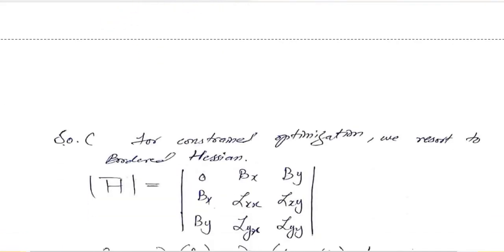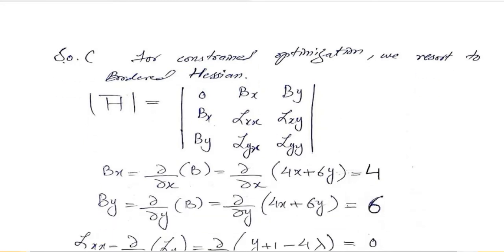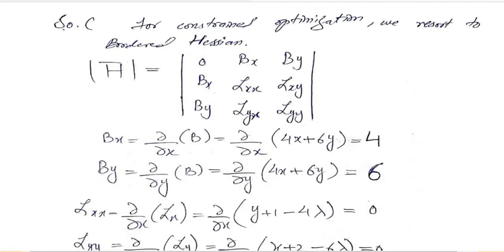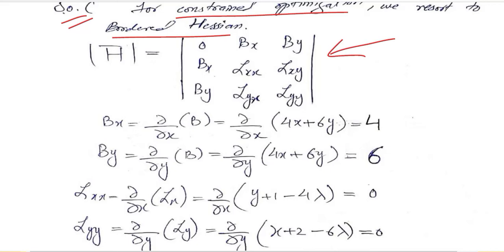Now it's easy for us to find the second order condition as well. In case of second order constraint optimization that we are dealing with, we use the bordered Hessian as we have understood before. This is the second order condition, the matrix version of it. This is the standard form. Zero starts the determinant. These are the constraint based derivatives, and this is the objective function based second order partial derivatives.